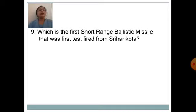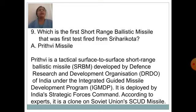Which is the first short-range ballistic missile that was first test fired from Shriharikota? Answer is the Prithvi missile. Prithvi is a tactical surface-to-surface short-range ballistic missile developed by the Defense Research and Development Organization of India under the Integrated Guided Missile Development Programme. It is deployed by India's Strategic Forces Command and according to experts, it is a clone of the Soviet Union's Scud missile.